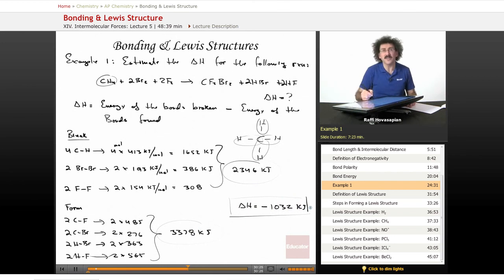Negative delta H, this is an exothermic reaction. When methane, bromine, fluorine come together to form CF2Br2 and two molecules of hydrobromic acid, two molecules of hydrofluoric acid, energy is released. 1,032 kilojoules per every mole of methane that reacts. Highly exothermic. That's it.